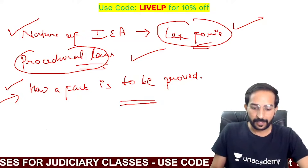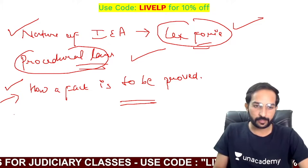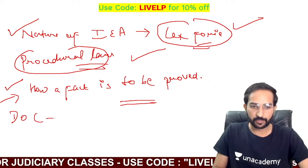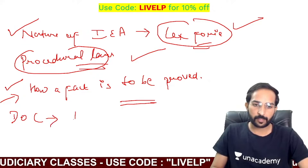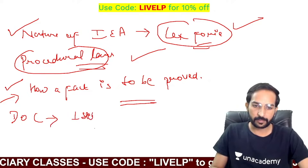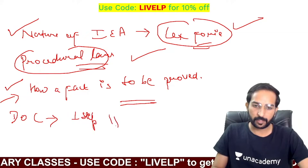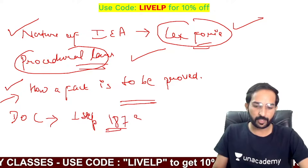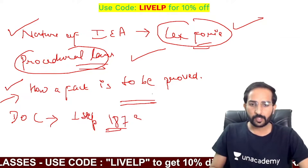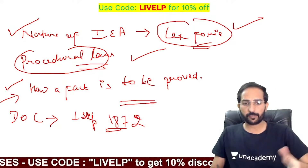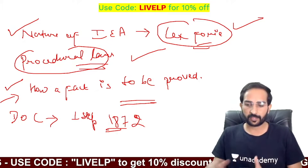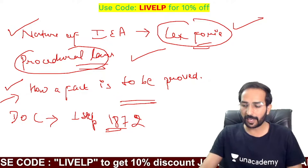Next, we will talk about the date of commencement — this is also an important exam question. The date of commencement, abbreviated as DOC, is 1st September 1872. This is a pre-exam question that comes up repeatedly.